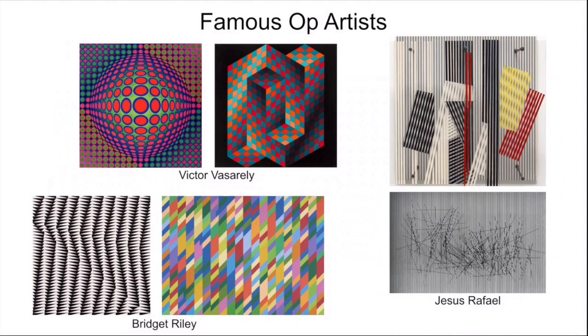Jesus Rafael, on the very right, he was a master of using big, long lines that kind of crossed each other very slightly. And when you cross lines very slightly, it can look like they vibrate.